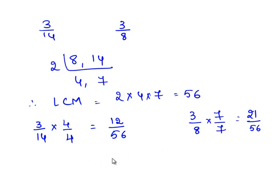So the obtained equivalent fractions are 12 by 56 and 21 by 56. Since both the denominators are same, we can compare the numerators. 21 is greater than 12, therefore 21 by 56 is greater than 12 by 56. That is, 3 by 8 is greater than 3 by 14.